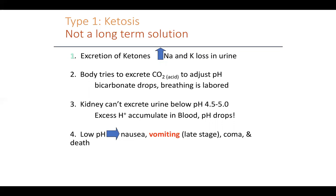Breathing becomes difficult and labored. We do have bicarbonate as part of our acid-base buffer system. However, bicarbonate levels will quickly become depleted with such high levels of acid. Eventually we don't have enough bicarbonate to neutralize what's being created, the urine pH drops to be excessively acidic, and hydrogen can't be excreted in the urine. So hydrogen just circulates in the blood, causing the blood pH to become dangerously acidic.